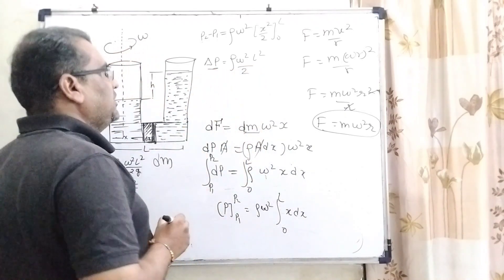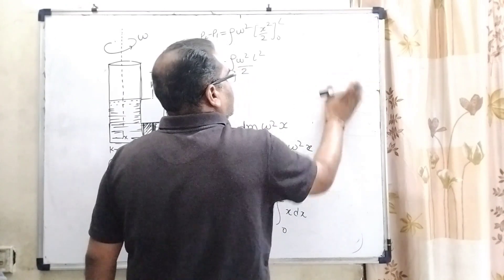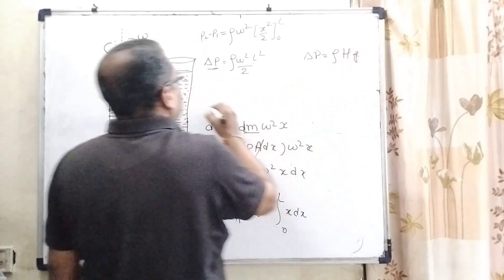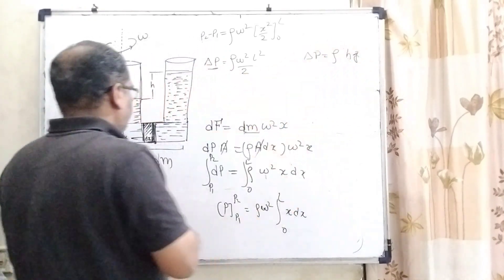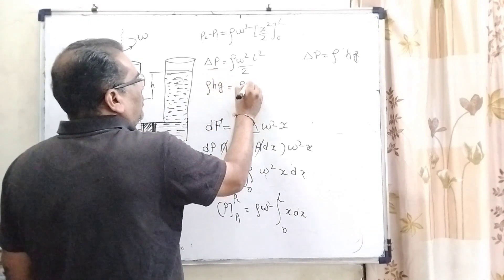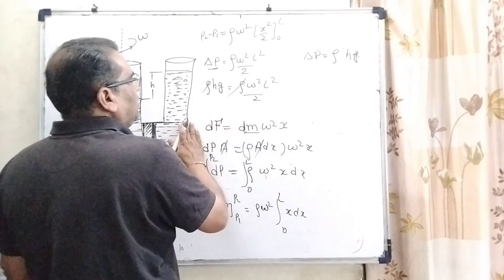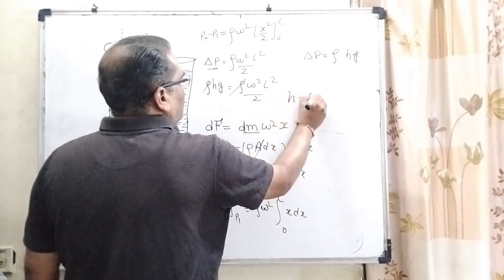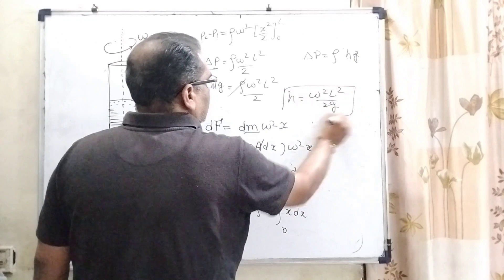As we know, by using Pascal's concept, change in pressure equals rho h g. So here we have written small h. Rho h g equals rho omega square L square by 2. Here rho cancels out, then h equals omega square L square by 2g. That is our answer.